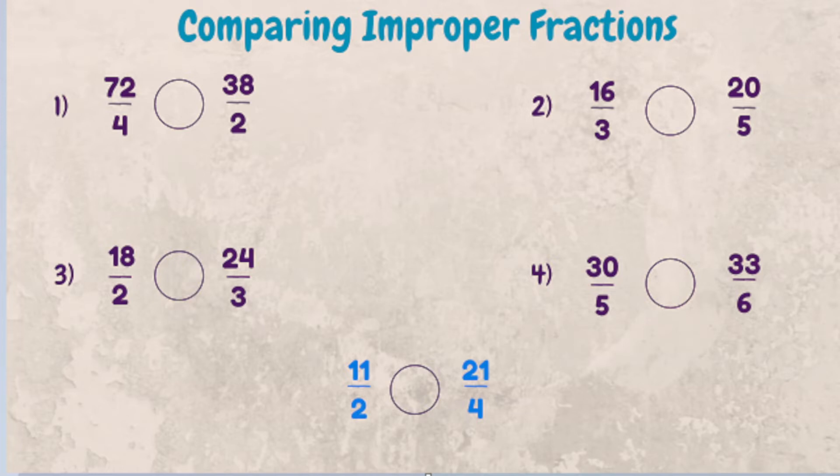Right? Whichever fraction has the larger numerator is the bigger fraction. But if you have improper fractions that have different denominators, comparing them becomes a little bit more tricky.